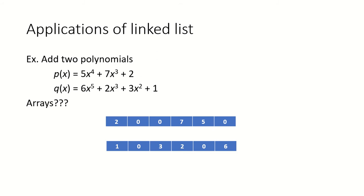Let's say we have to add two polynomials P(x) and Q(x). P(x) is 5x to the power of 4 plus 7x cubed plus 2, and Q(x) is 6x to the power of 5 plus 2x cubed plus 3x squared plus 1. Can we use arrays to represent these polynomials and add them?